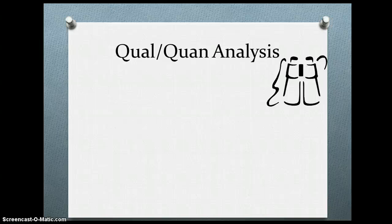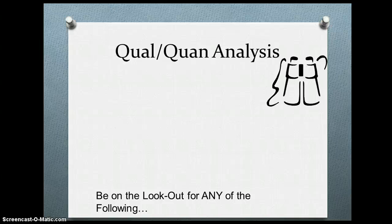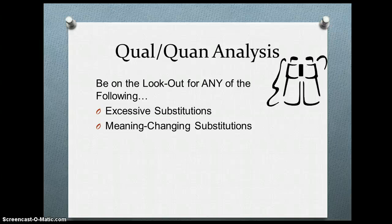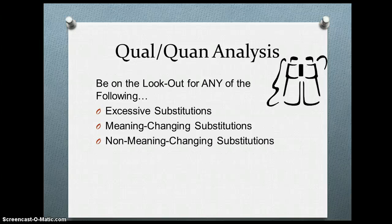Some of the qualitative analysis you can do is to look at the frequency of reading behaviors. Be on the lookout for excessive substitution — substitutions are the number one type of miscue on a running record. If there is an excessive amount of substitutions, it's highly likely that the text is not at the student's independent reading level. Also look for meaning-changing substitutions, which imply the student is not considering the meaning of the text as they read. Non-meaning-changing substitutions mean they are thinking about meaning and possibly syntactic structure, but might not be using their decoding or visual cueing system.